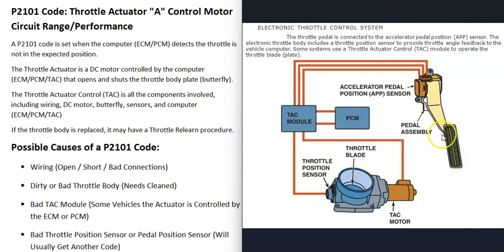The specific computer used can vary depending on the year, make, and model of the vehicle. There can be a dedicated computer called a throttle actuator control module, or it can all be controlled by the main computer — like the powertrain control module or the engine control module. When you get a P2101 code, something has gone wrong inside this system and the computer is seeing some kind of issue, so it will need to be troubleshot to know why.